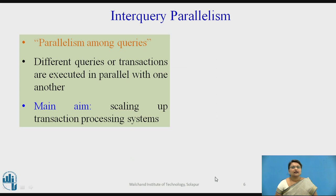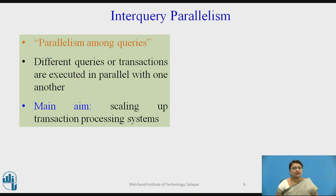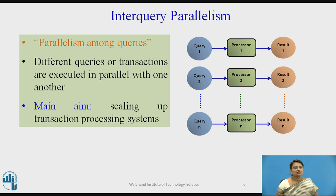Interquery parallelism is parallelism among queries — whatever number of queries are in a transaction, all those queries are parallelized, with every query executing on a different processor. Different queries or transactions are executed in parallel on one or more processors. The main aim is scaling of the transaction processing system. Query 1 runs on processor 1, query 2 on processor 2, up to query n on processor n — all executing in parallel.